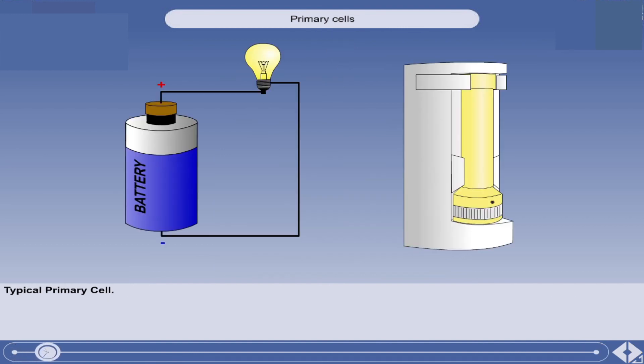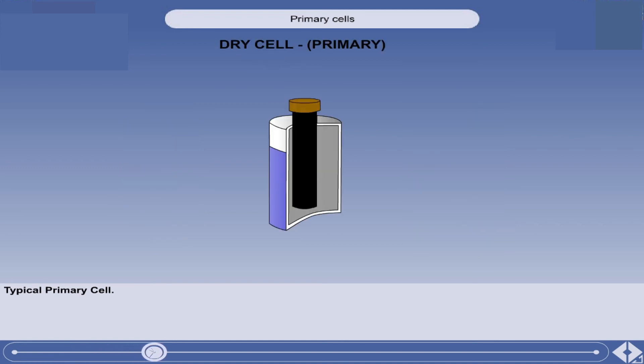Most aircraft torches use single cell batteries of the primary cell type. A typical primary cell is shown here.